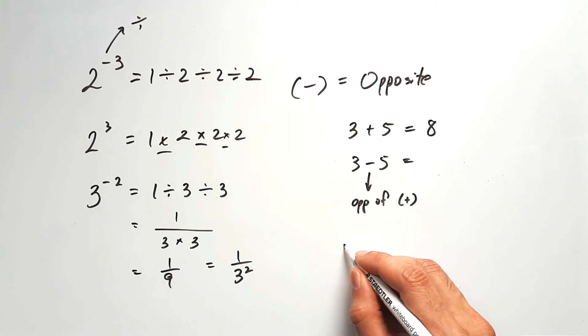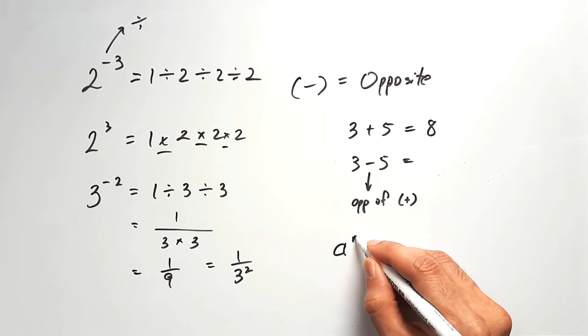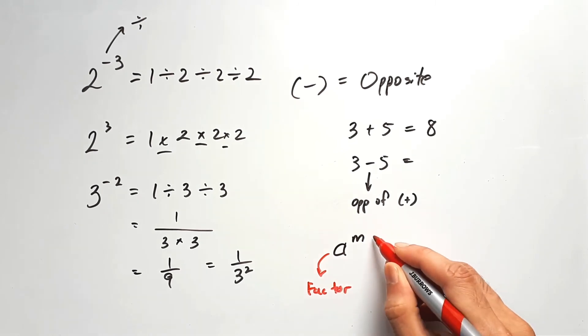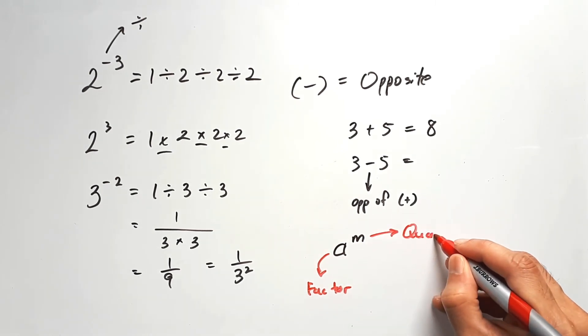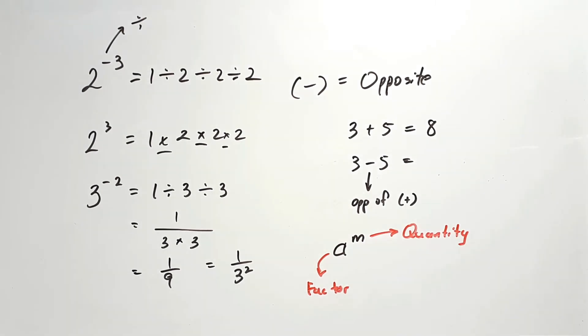Basically, if you have something like a to the power of m, the a is supposed to be a factor, while m is supposed to be a quantity. Officially, a factor is known as a base, and a quantity is known as an index.